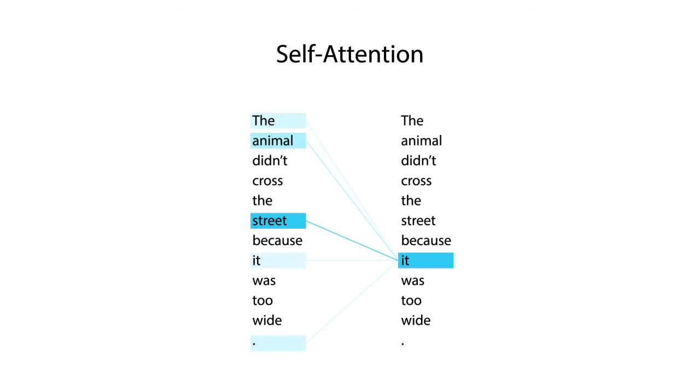Capturing such relationships is vital for a machine to understand a language. Words that are not close in proximity can still be related in an important way.